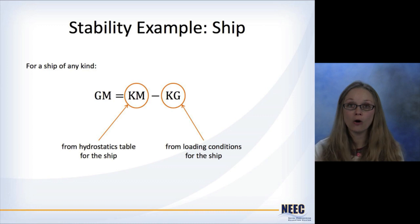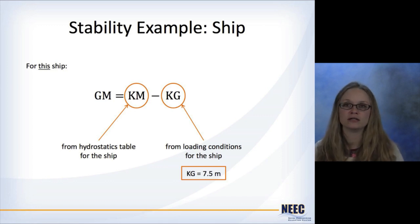For a ship of any kind, you can always use this equation: GM is equal to KM minus KG. Remember KM you're going to get from hydrostatics and KG you're going to get from the loading conditions. So somebody comes along and they tell you that for this loading condition, KG was 7.5 meters.